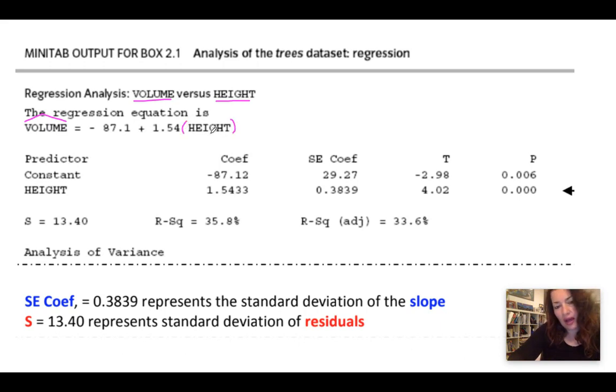The height is our explanatory variable, and the volume here is our response variable. Sometimes in a Minitab output such as this, you will not be given an equation. You will need to identify your y-intercept and slope, and then write the equation.